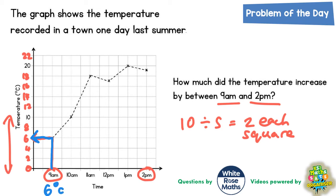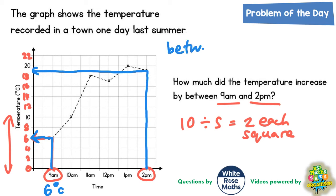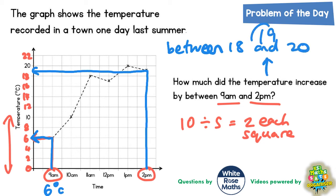Now at 2pm we need to do the same. We find 2pm along the bottom, draw a line straight up to where it meets the line graph, and then draw a line across - you could do this with a ruler. That is not pointing to 18, it's not pointing to 20, it's pointing between 18 and 20. The number between 18 and 20 is 19, so at 2pm it was 19 degrees.